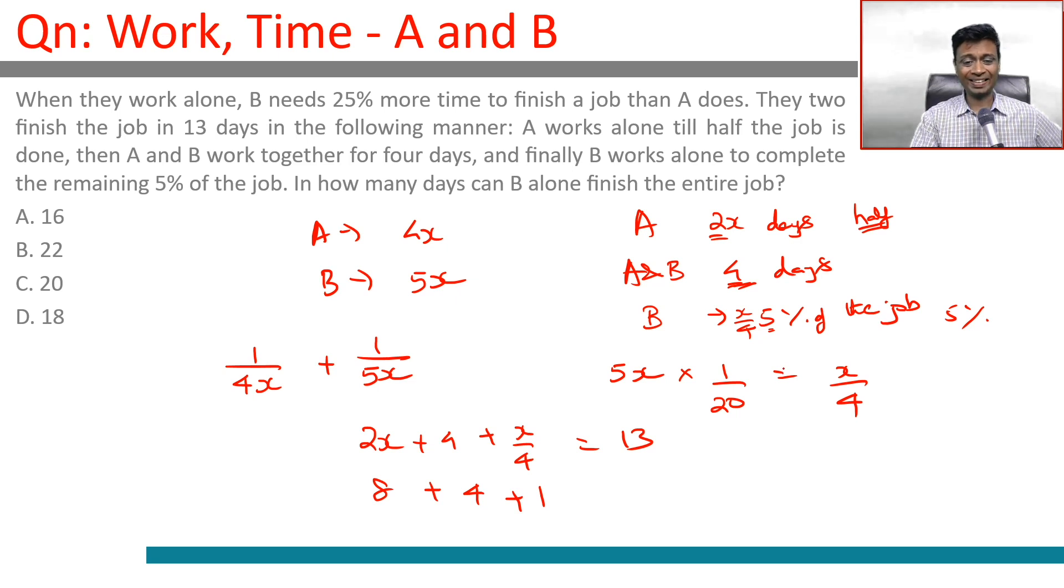So x is 4. Therefore, A should take 16 days and B should take 20 days.